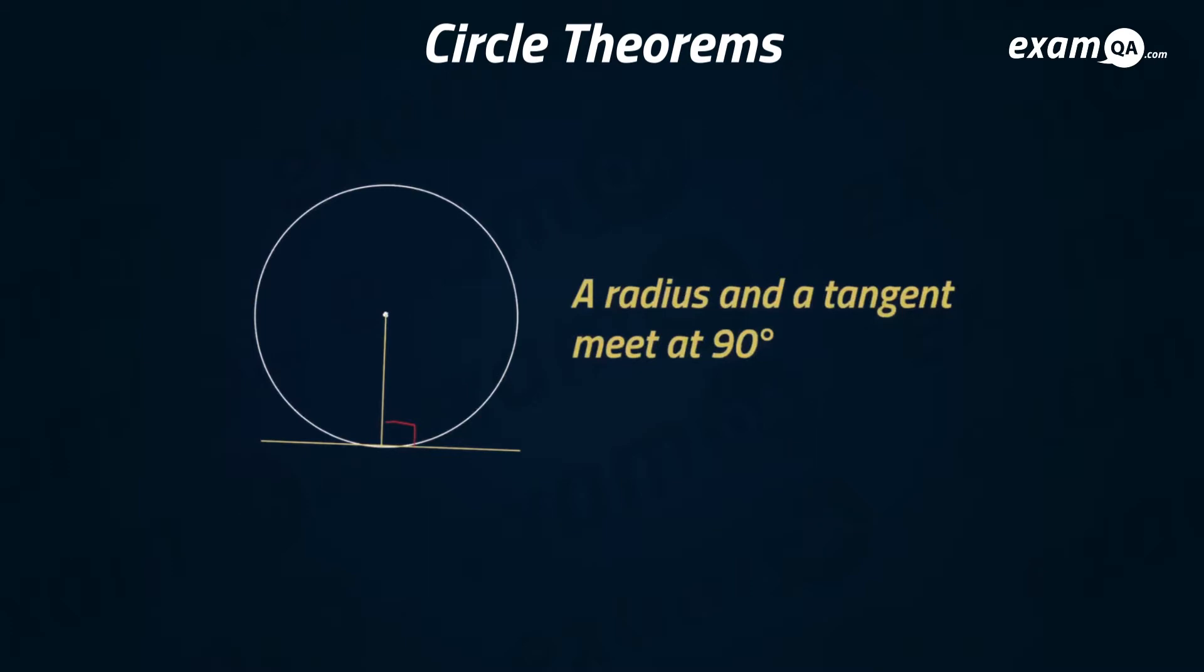The most easiest and simple circle theorem we have is that a radius and a tangent meet at 90 degrees. So that angle will always be 90 degrees, and also that angle on the other side of course, because angles in a straight line add up to 180 degrees.